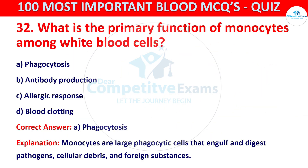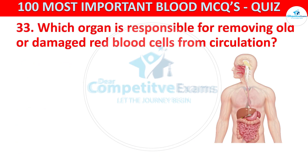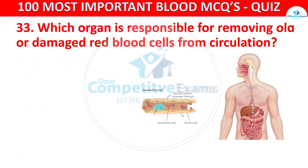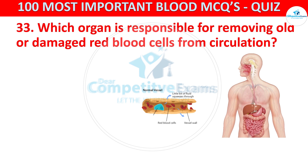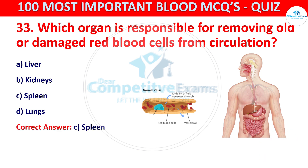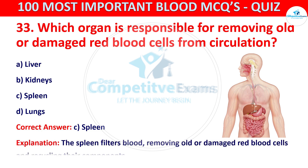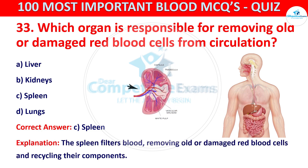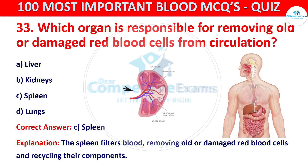Question number 33. Which organ is responsible for removing old or damaged red blood cells from circulation? Your options are liver, kidneys, spleen, or lungs. The correct answer is C, that is spleen. The spleen filters blood, removing old or damaged red blood cells and recycling their components.